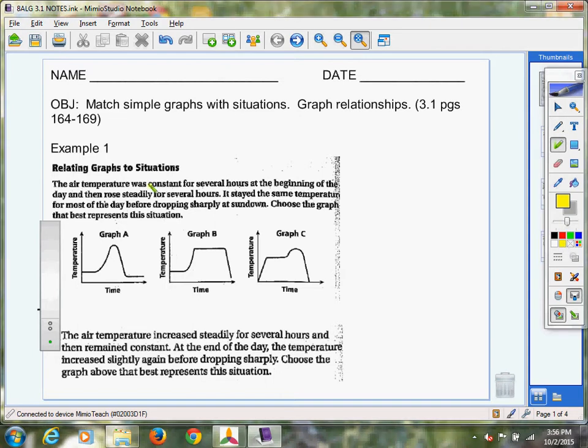And the first, what we can see is that we've got constant for several hours at the beginning of the day. So that's what the air temperature did at first. Then rose steadily for several hours. So constant for several hours, rose steadily for several hours, stayed the same temperature for most of the day, and then dropped sharply at sundown. So by my count, it looks like we have four things we are tracking.